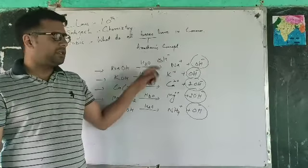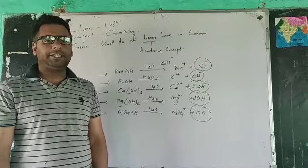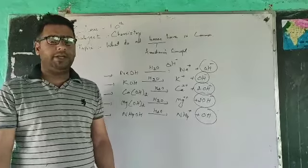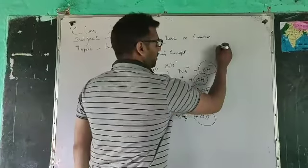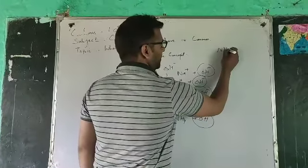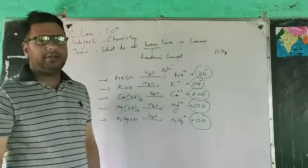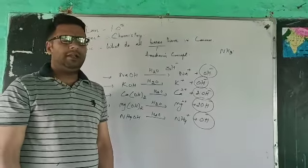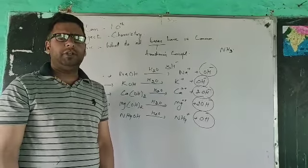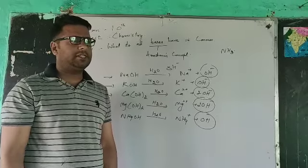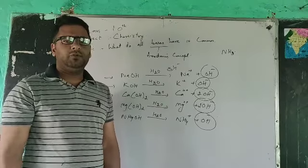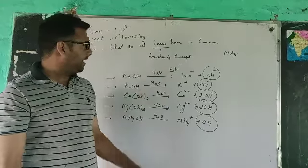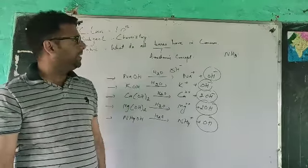But the Arrhenius concept also suffers from some limitations. For example, ammonia is also a base, but it does not provide any hydroxide ion. This means the concept was challenged and eventually rejected. Many more concepts were given from time to time to describe acids, bases, and salts. But at this time, we will focus our attention on what do all bases have in common, and discuss the limitations of the Arrhenius concept in later videos.